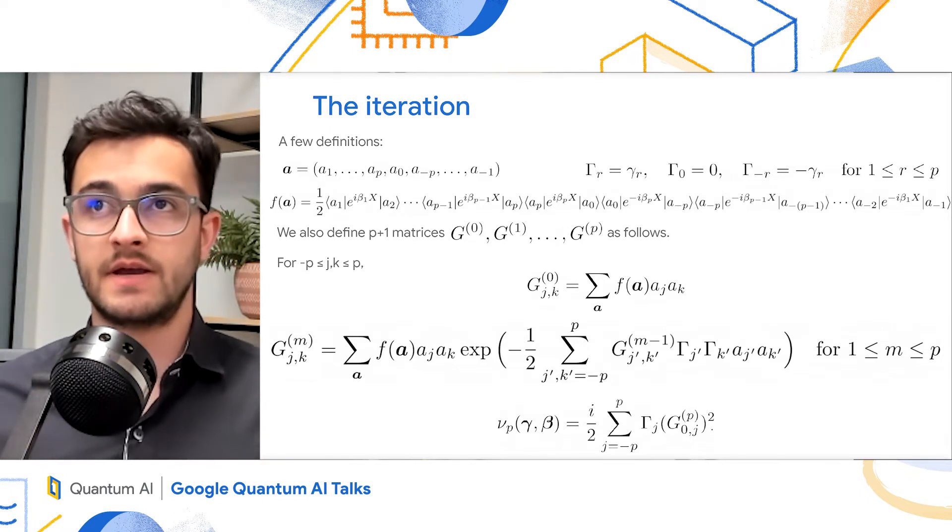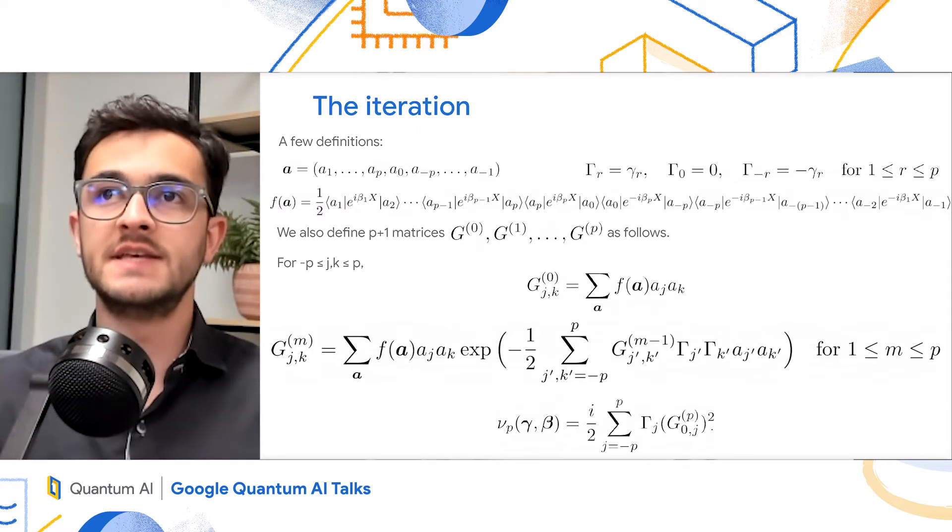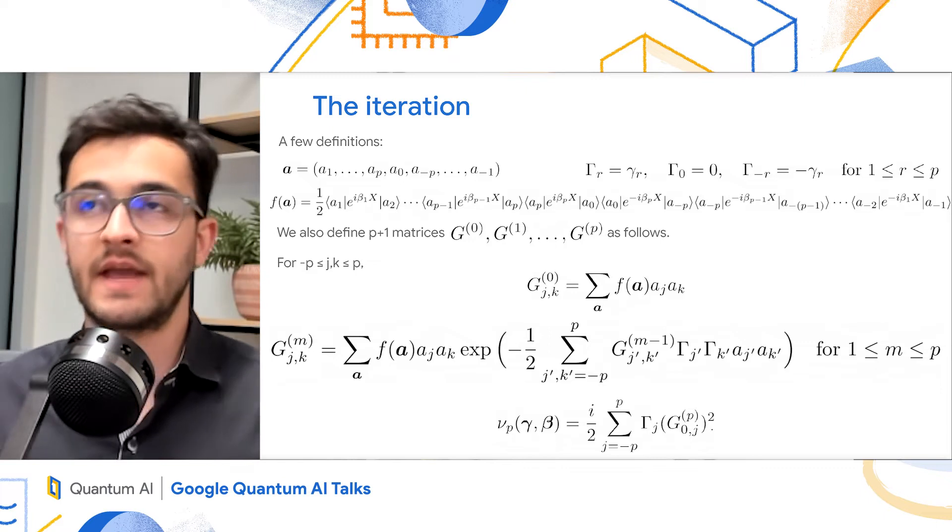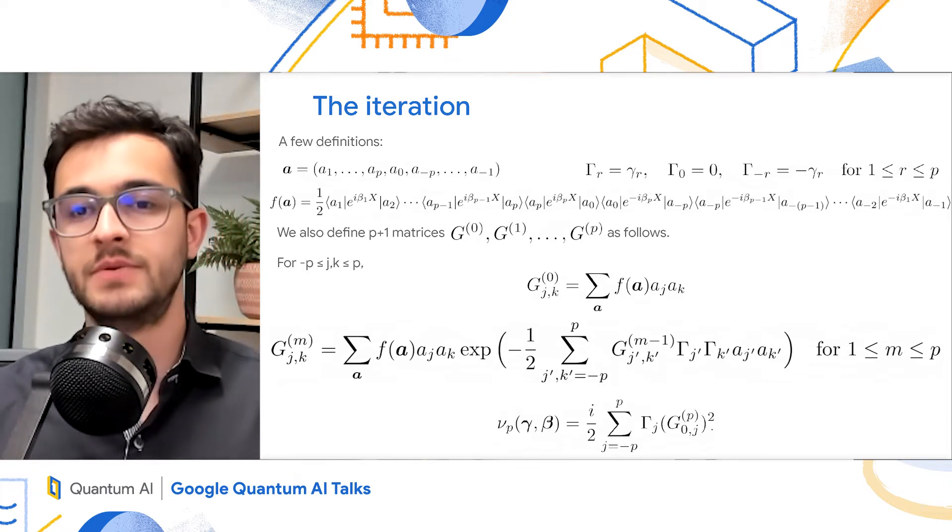So here's what the iteration looks like. We'll define matrices G superscript m. So the first matrix, G superscript 0, its entry j,k is given by the sum over all bit strings of f of a, a_j, a_k.